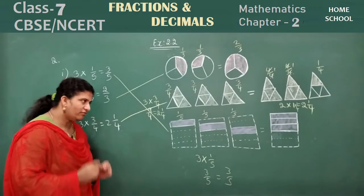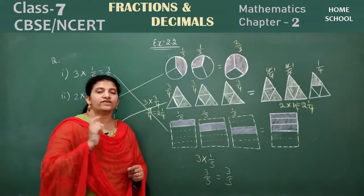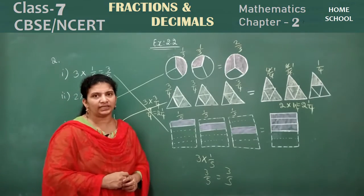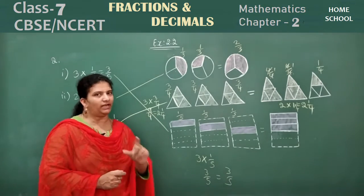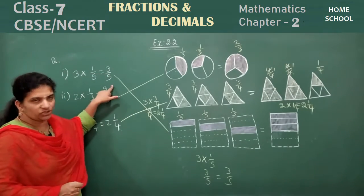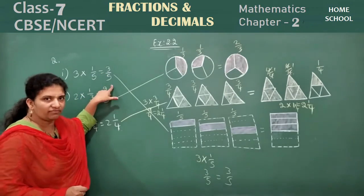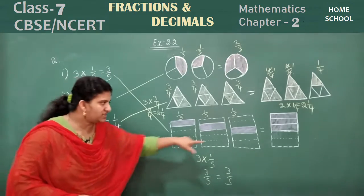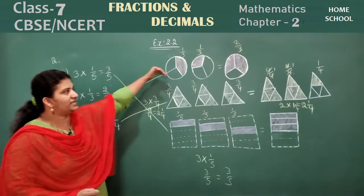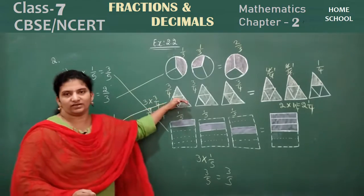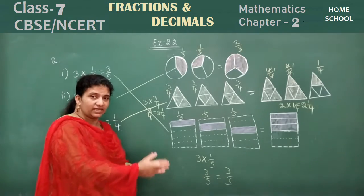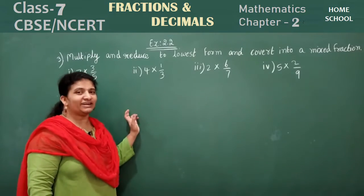Now for the first main exercise, observe the figure and write the fraction. Draw the figure below in the same manner — all problems continue like that. For the sub-questions: 3 into 1 by 5 equals 3 by 5 — identify the figures and write them below. Second problem has these figures, third problem these figures. Don't write it as a match-the-following; identify the pictures and the fraction correctly.